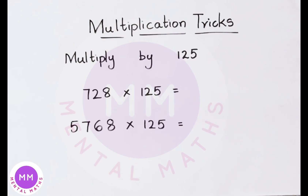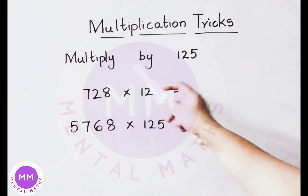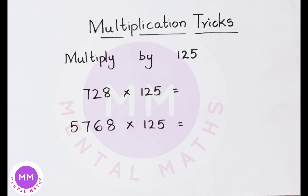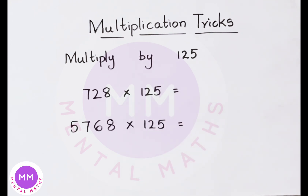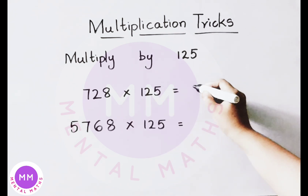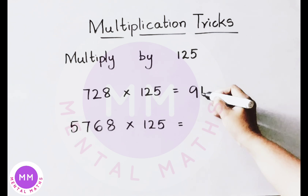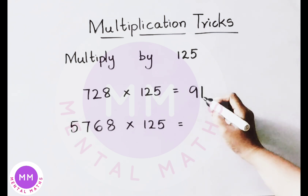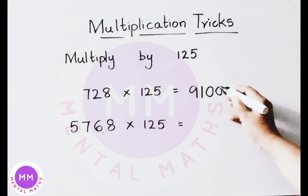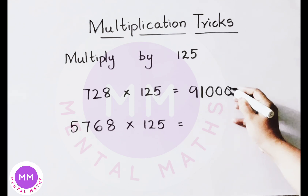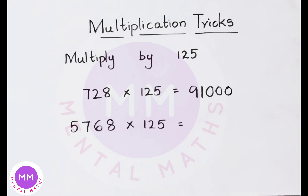Next trick: how to multiply any number by 125 quickly. See the example: 728 multiplied by 125. First divide the given number by 8. 8 into 72 is 9 times, then 8 into 8 is 1 time. Now multiply this value by 1000 — write three zeros at the end — so the answer is 91,000.